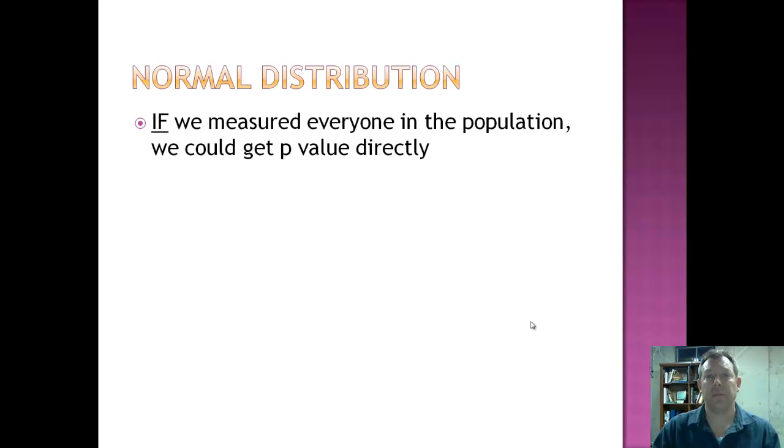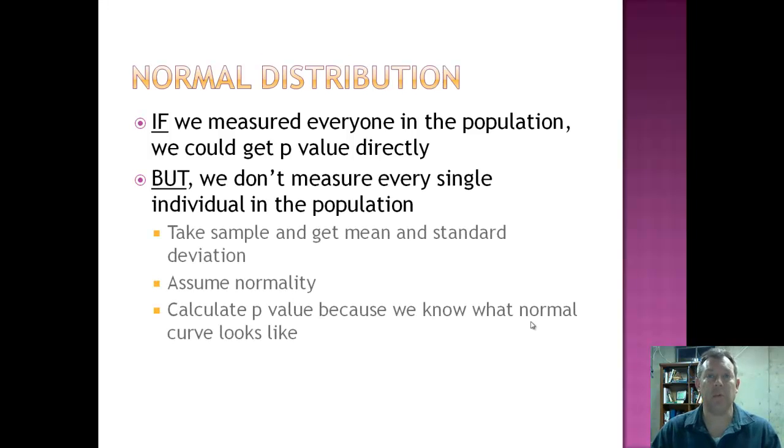If we could measure everybody in the population, we could get our p-values directly. We would not need to assume normality. We would not need to do a lot of fancy math. In fact, later on, we'll probably do some Monte Carlo randomization tests in which we don't even need to do stats. But right now, we know that we can't measure every individual in the population. And so to compensate, we have to take a sample, get the mean and the standard deviation of that sample. We also know the size of the sample. Then we assume normality. And if we assume normality, we can define a normal curve based upon that mean and that standard deviation. And if we can define the normal curve, that means we can calculate probabilities. And that allows us to calculate a p-value because we know what that normal curve looks like.